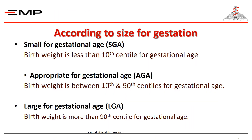Lastly, neonates can be classified according to size for gestational age. They are classified as small for gestational age — those whose birth weight is less than the 10th centile for gestational age — appropriate for gestational age — those with birth weight between the 10th and 90th centile — and large for gestational age — those whose birth weight is more than the 90th centile.